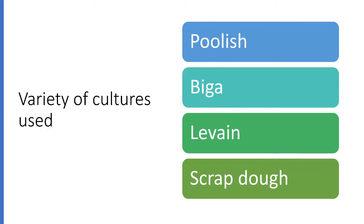The first yeast pre-ferment is poolish, which is said to have originated in Poland and the word poolish comes from Polish. A poolish is a thin yeast starter made with equal parts of flour and water plus commercial yeast. The formula for poolish is 100% flour, 100% water and varying percentages of yeast depending on the desired speed of fermentation. To contribute maximum flavor, a poolish is made with only a small quantity of yeast and given a long fermentation at room temperature.